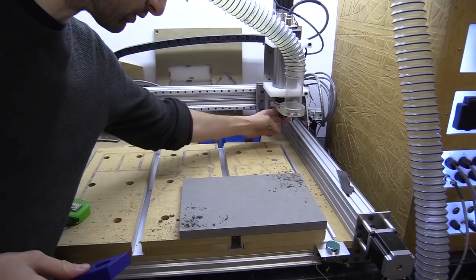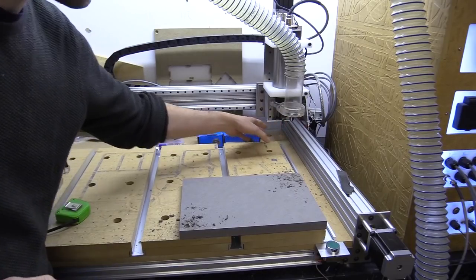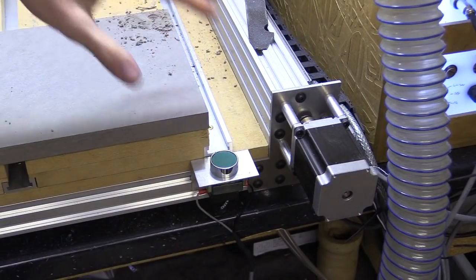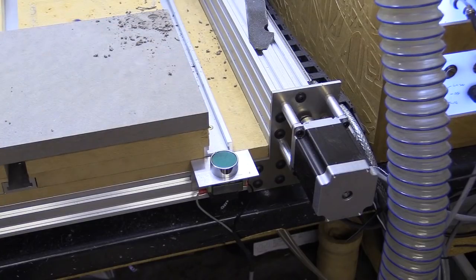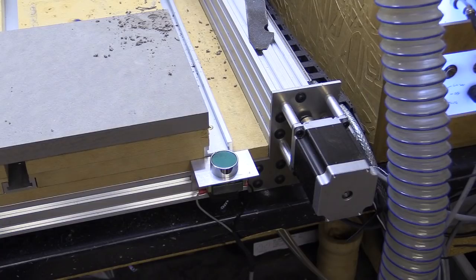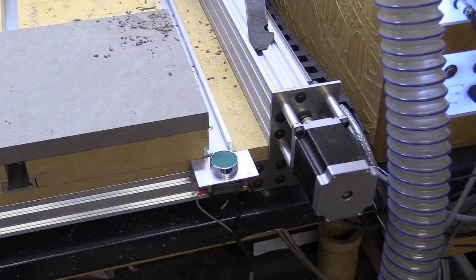I've got an 8mm upcut bit in there already, which I'm going to move to the probe location on this CNC machine so I can work out the length of the bit. Then I'm going to change over to a spot bit to mark up where I'm going to drill the smaller holes, and then back to the 8mm bit to cut out the final shape.